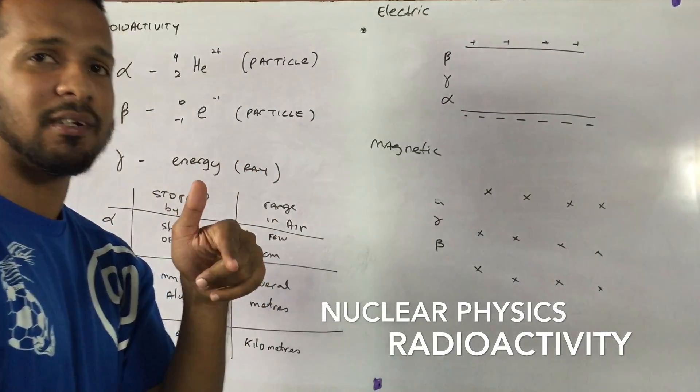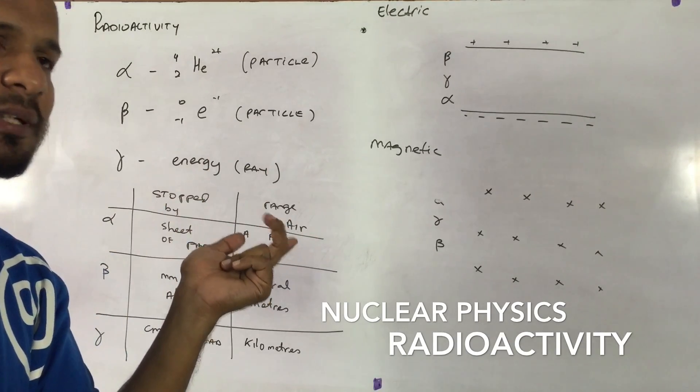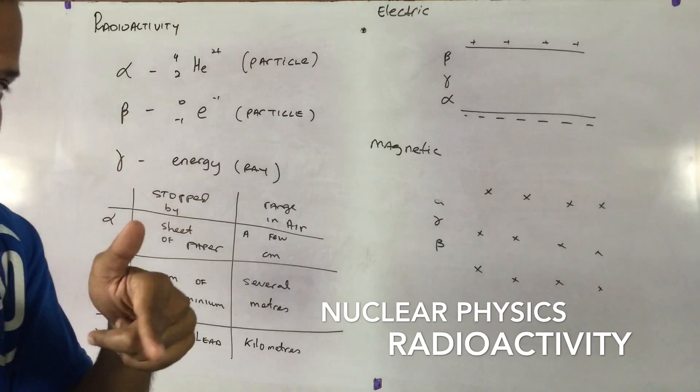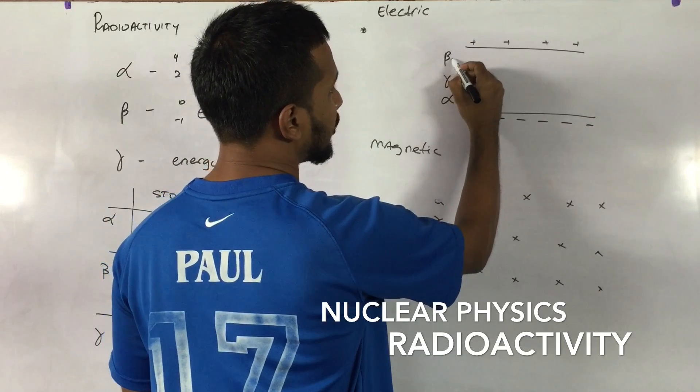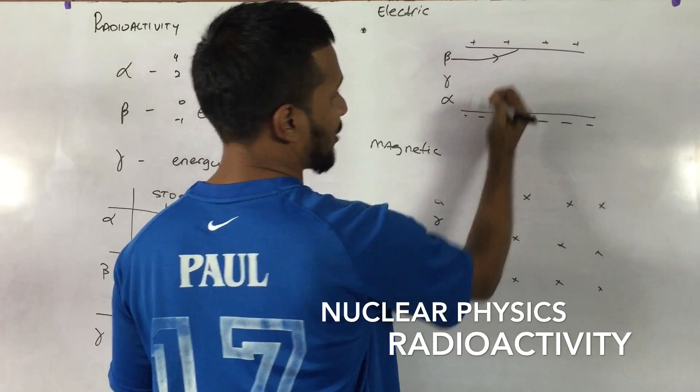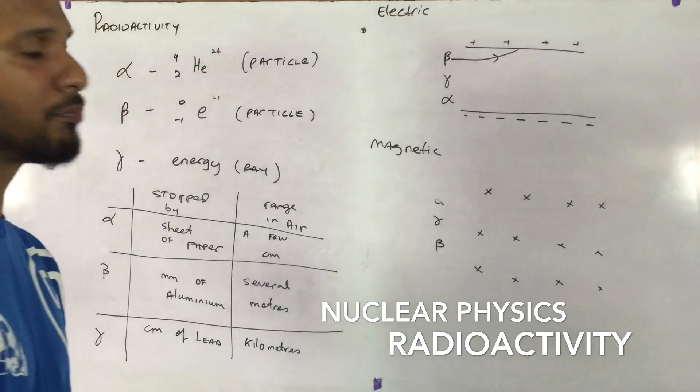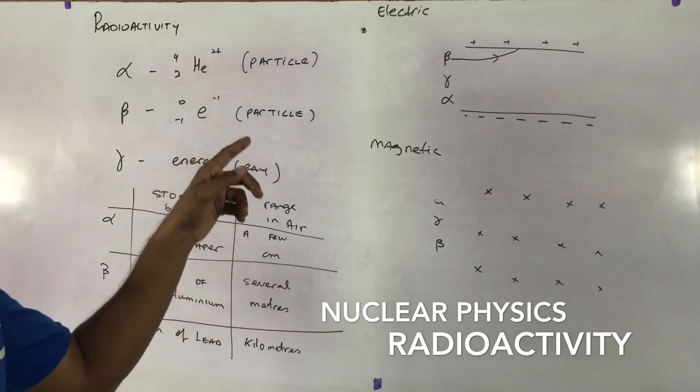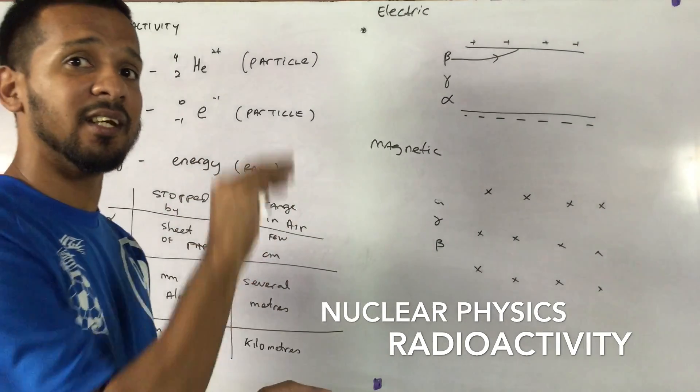So where do you think a beta particle would travel? A beta particle is negative. So a negative should be attracted to the positive. So the beta particle will travel and be attracted towards the positive. Alpha now, alpha is positive, so it should be attracted to the negative.